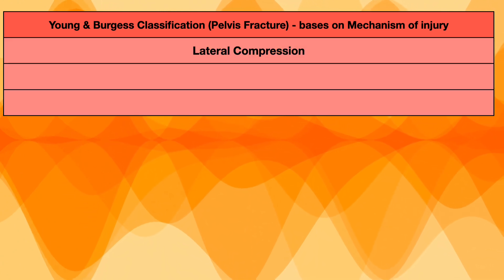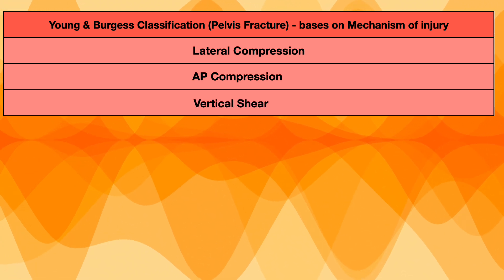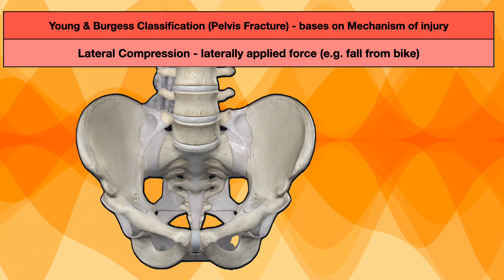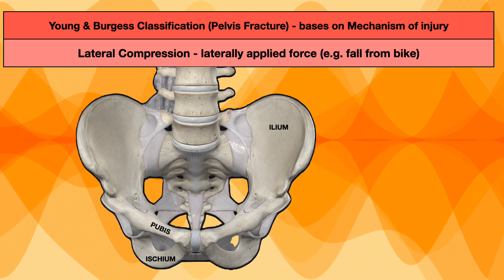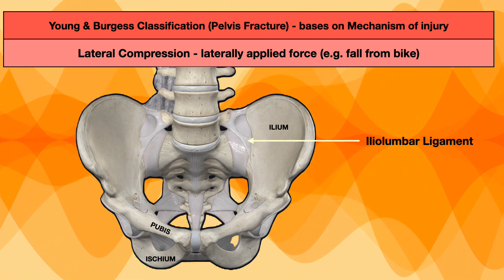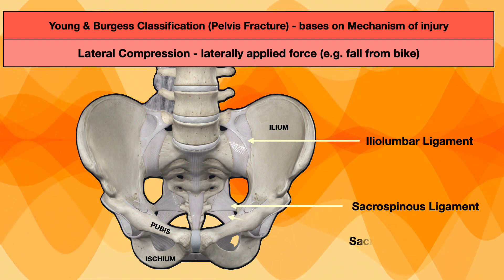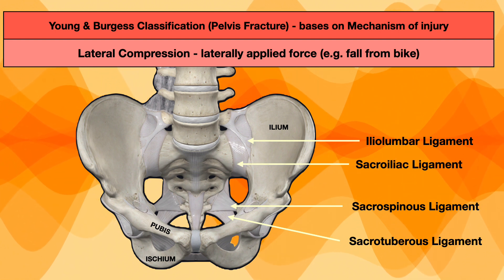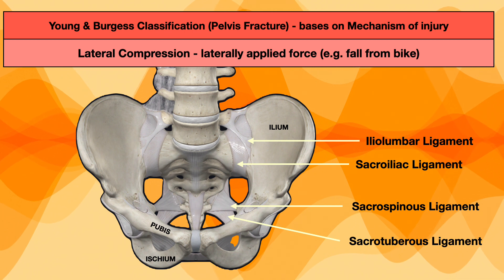It has three types: lateral compression, anteroposterior compression, and vertical shear. Let's first look at the basic anatomy to understand this classification. We already know the names of the bones — ilium, ischium, and pubis. The iliolumbar ligament, sacrospinous ligament, sacrotuberous ligament, and sacroiliac ligament are all important, and we should have knowledge about these ligaments to understand this classification thoroughly.